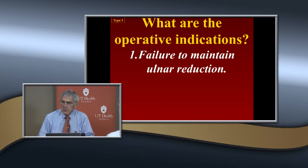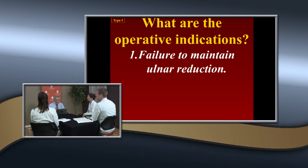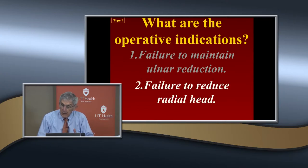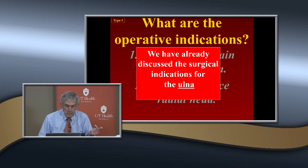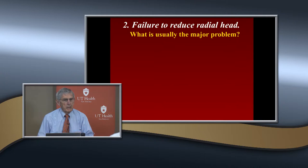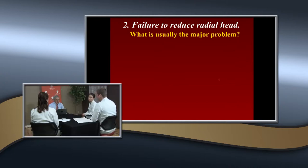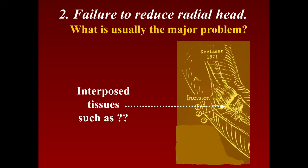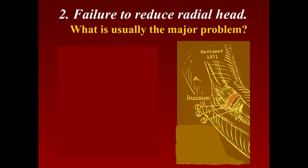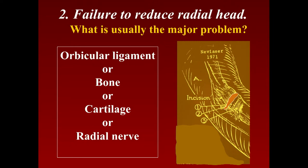What are the operative indications? You can't get the ulna reduced — that's one. We know that putting the IM rod is a simple, very minimally invasive procedure. Or you have a failure to reduce the radial head. If you can't get the radial head in, the usual major problem is interposed tissue — such as the annular ligament, pieces of bone, cartilage. There's even one case described where the radial nerve was interposed.